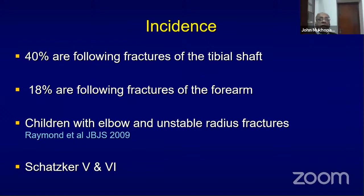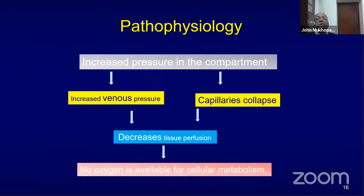A majority of compartment syndromes occur following fractures of the tibial shaft. Eighteen percent follow fractures of the forearm. Children with elbow and radial fractures — supracondylar or forearm fractures — especially with a tight bandage or cast, are at very high risk. It's also common in proximal tibial fractures, particularly Schatzker 4, 5, and 6 type injuries.